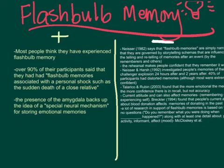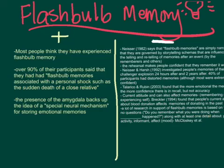Other studies that don't support flashbulb memory include Tallarico and Rubin, who found that the more emotional the memory, the more confidence there is, but not accuracy. Also, current attitudes can affect memories — connected to Kahneman's experiencing self versus the remembering self. Breckler in 1994 found that people's current attitude about blood donation affects their memories of donating in the past; if they've since seen signs about saving lives, they might not remember the bad parts as much.